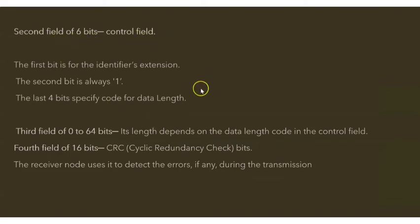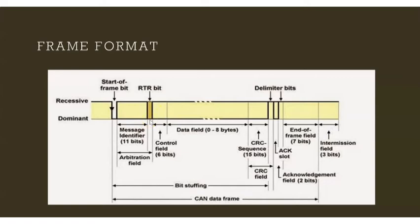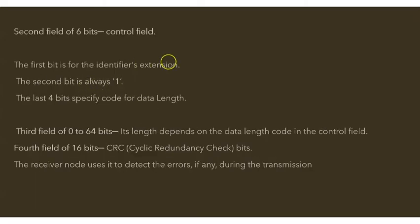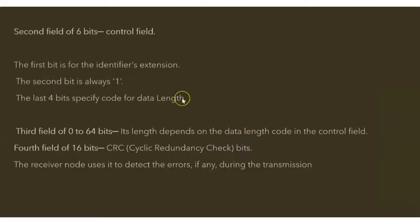The second field is the 6-bit control field. The first bit is the identifier extension — an extension of the previous identifier field. The second bit is always 1. The last 4 bits specify the data length code, indicating the length of the data packet. So the control field has 6 bits: 1 identifier extension bit, 1 reserved bit always set to 1, and 4 data length bits.